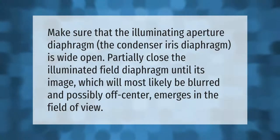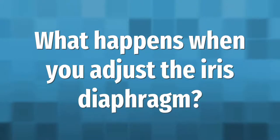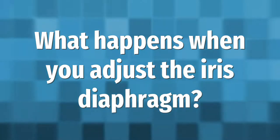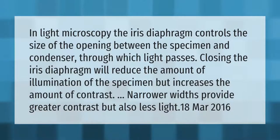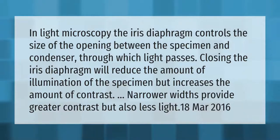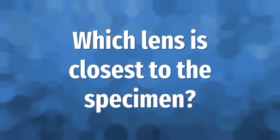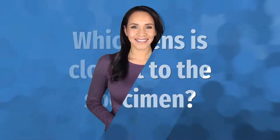In light microscopy, the iris diaphragm controls the size of the opening between the specimen and condenser through which light passes. Closing the iris diaphragm will reduce the amount of illumination of the specimen but increases the amount of contrast. Narrower widths provide greater contrast but also less light.